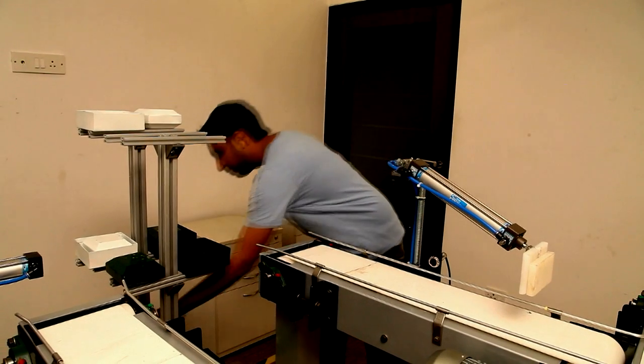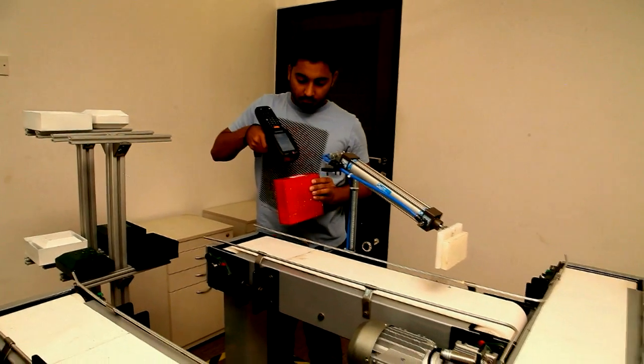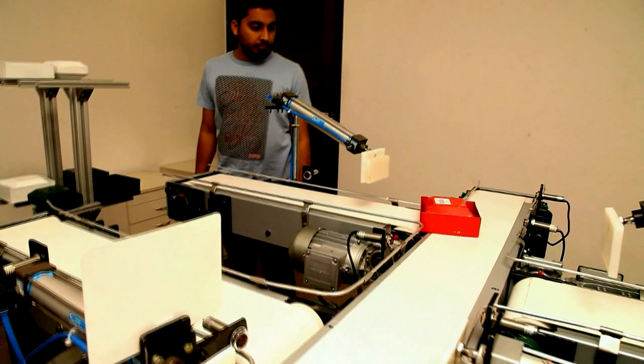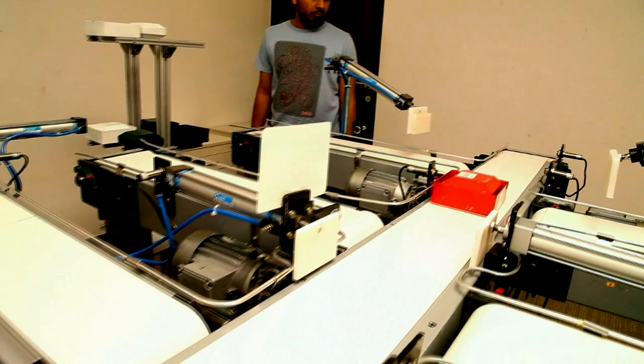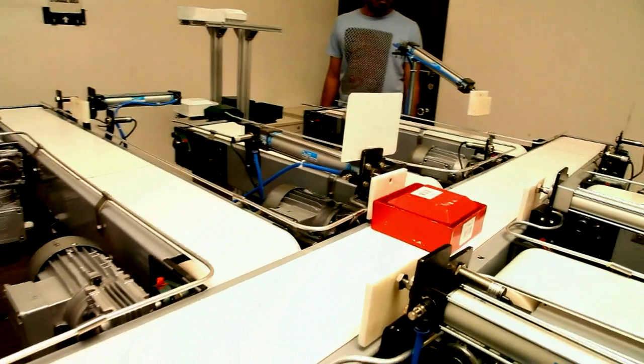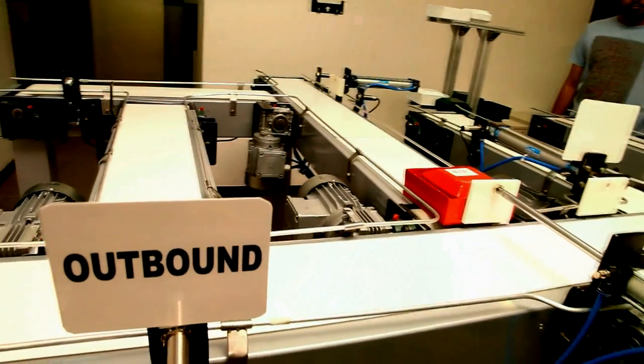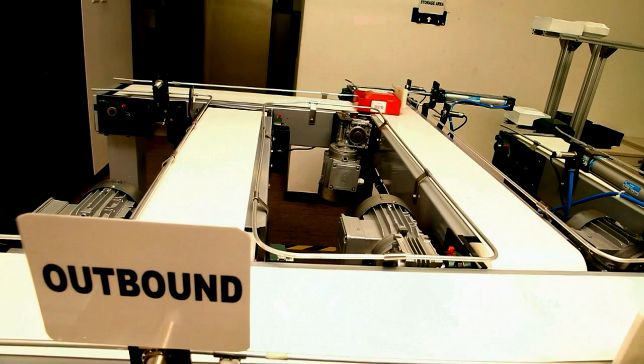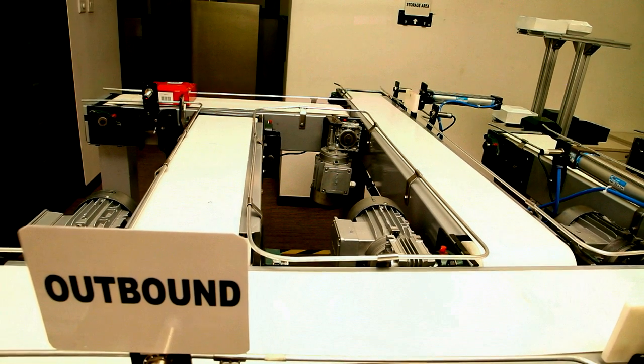Sequencing and storage can be automated by ASRS system, thereby removing any manual intervention. The routing of the product is decided by EWM MFS. EWM MFS directly interacts with PLC of the conveying system and ASRS and routes the product to the particular location. EWM MFS and PLC communicate continuously to decide the routing until the product reaches the final outbound destination location.